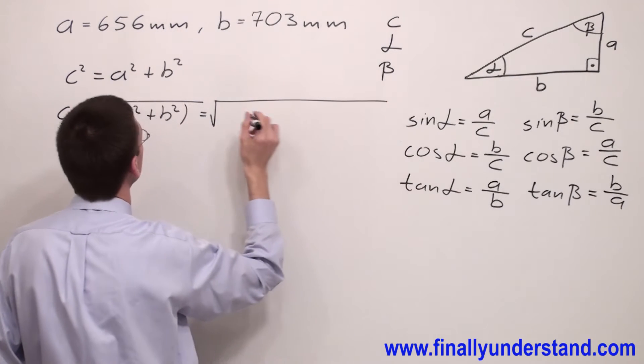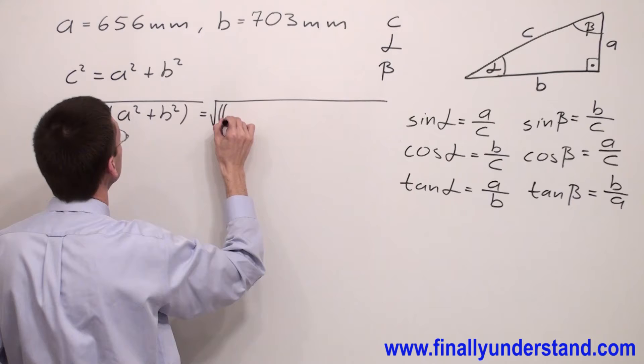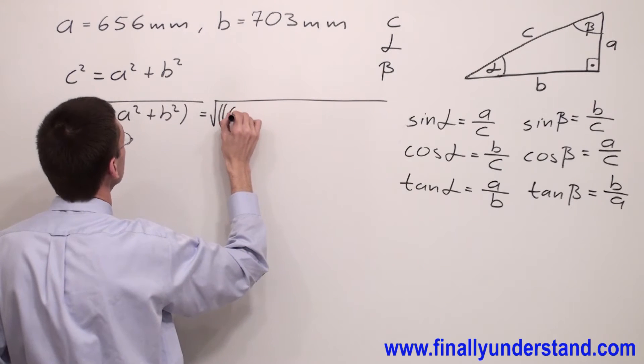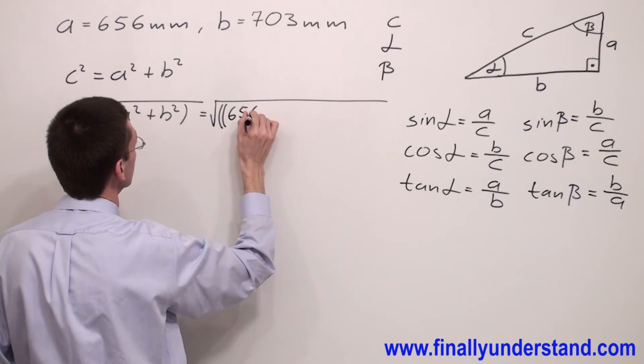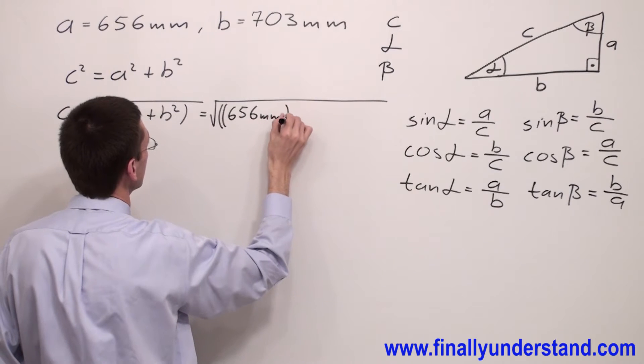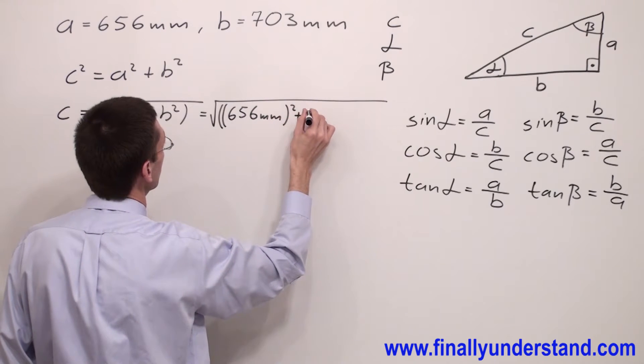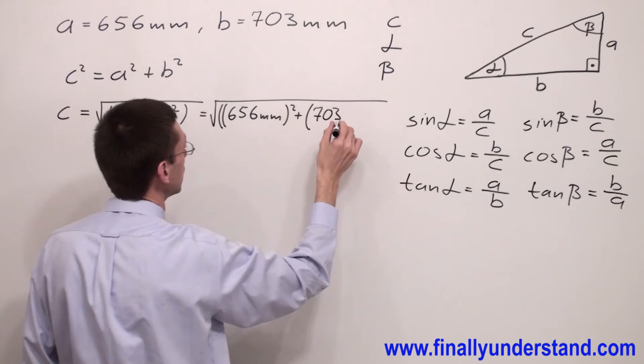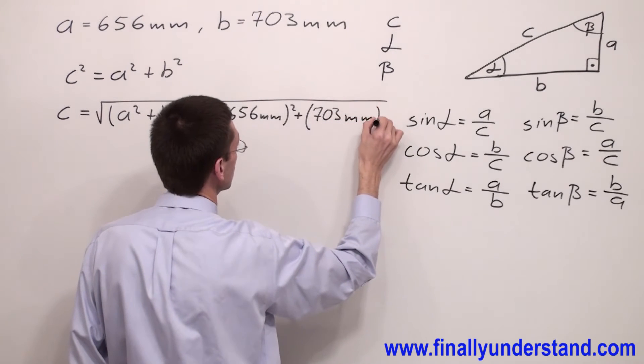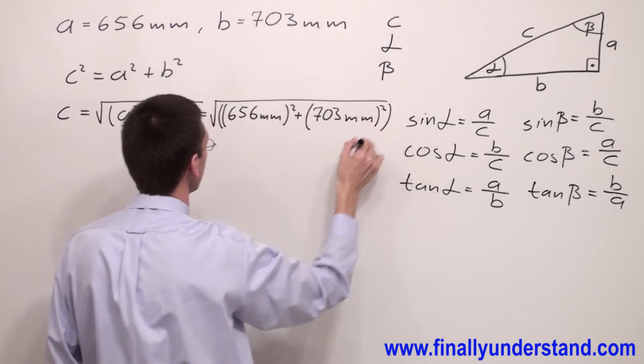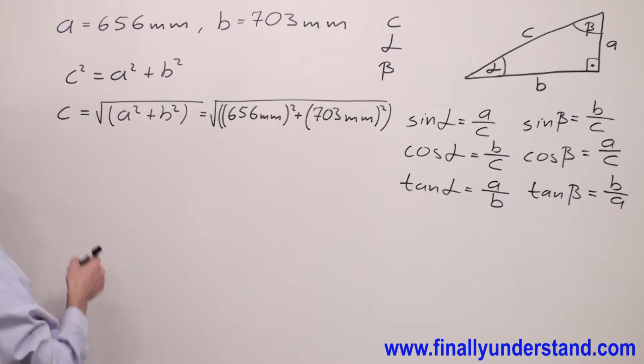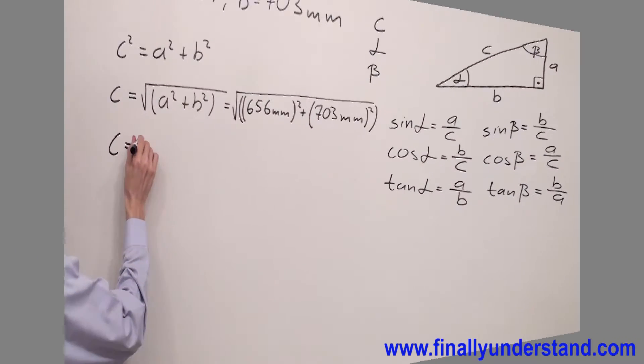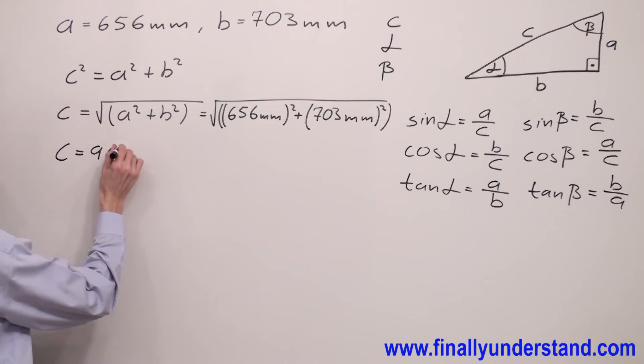...square root, open parenthesis, 656 millimeters squared plus 703 millimeters squared. If you're going to use the calculator, you're supposed to get 961...